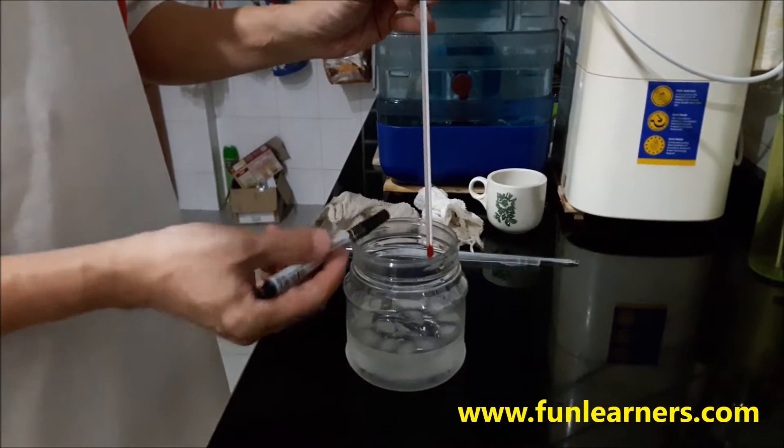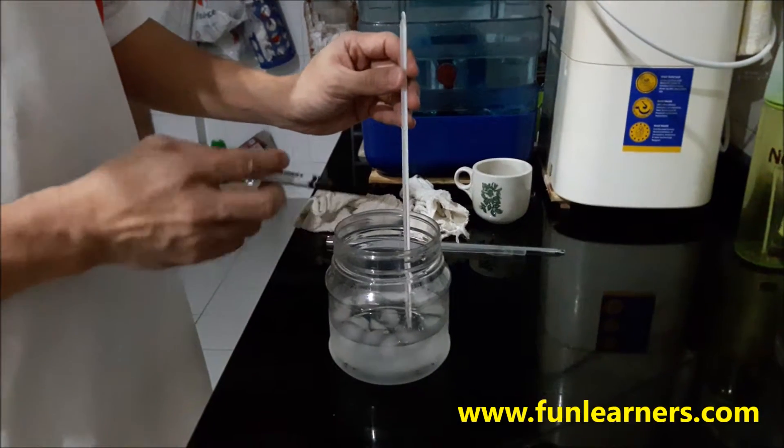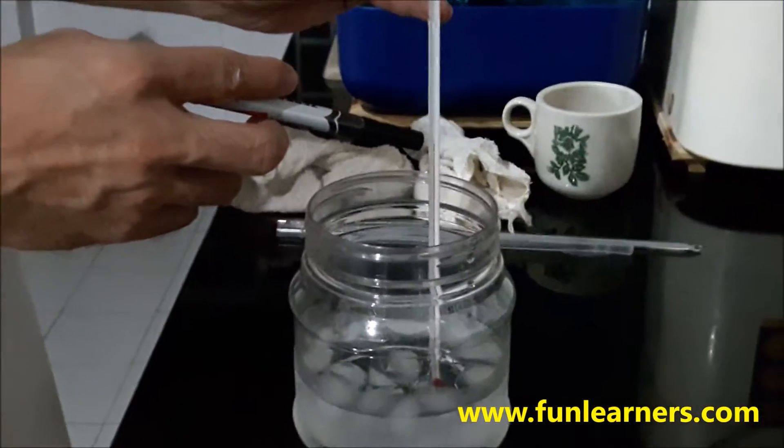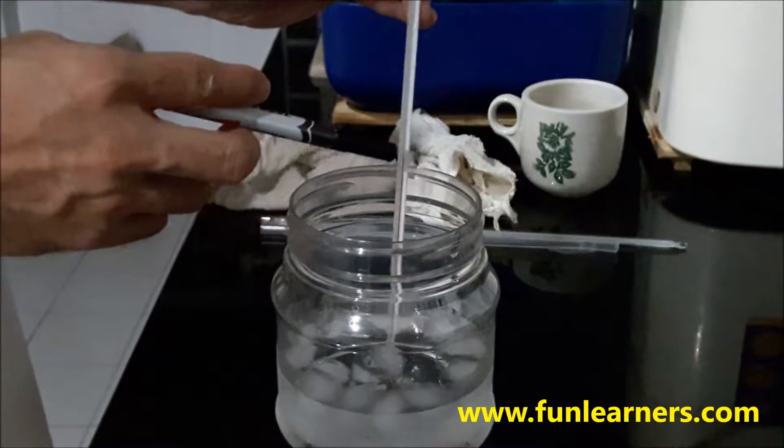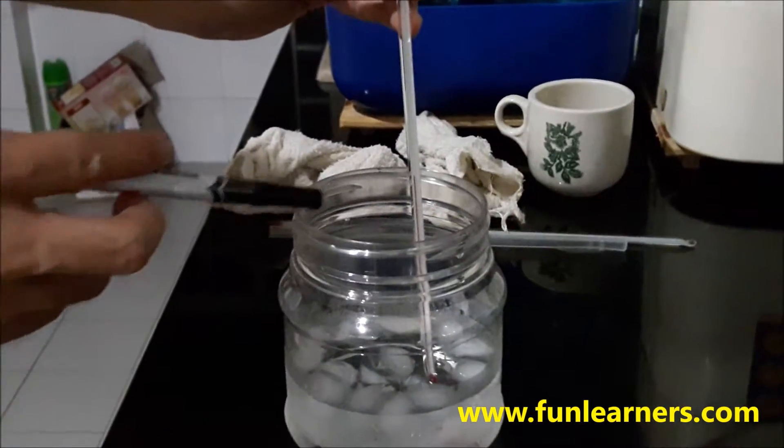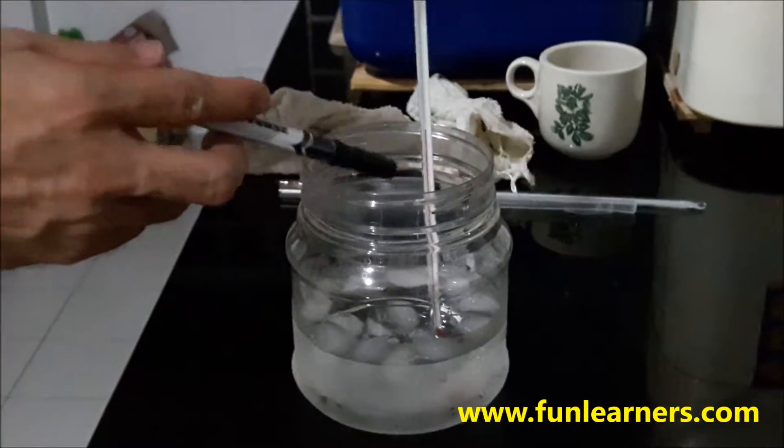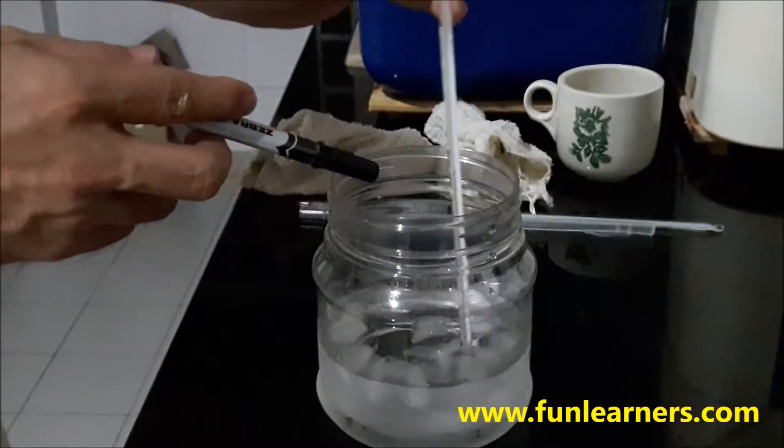So we just insert the bulb inside the ice water. You can see that the alcohol is going down. This thermometer can go down to negative temperature, so at this value now is approximately zero.